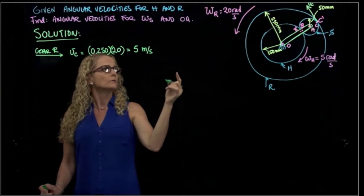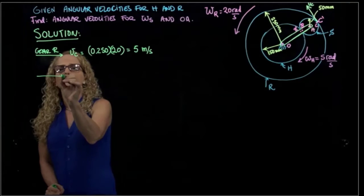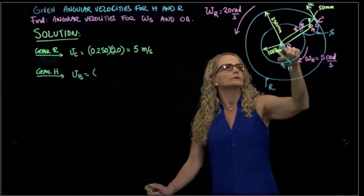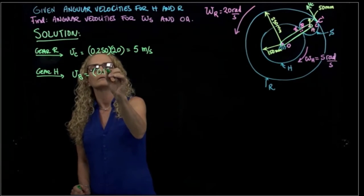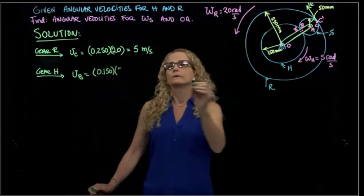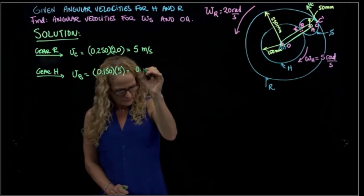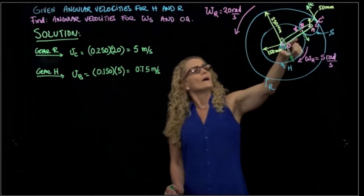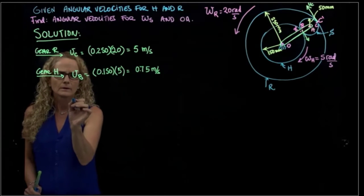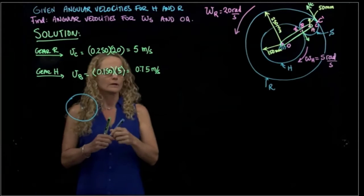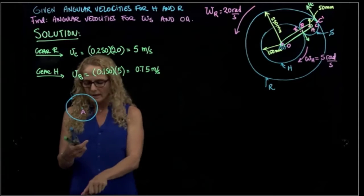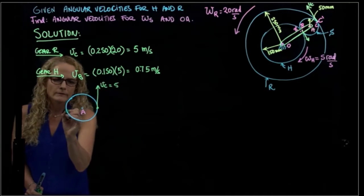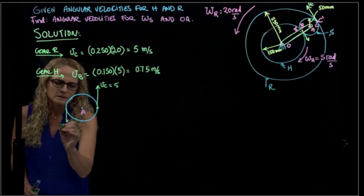Using gear H, I can calculate the velocity of B. The distance from the center of rotation is 0.150 meters, and the angular velocity is 5 radians per second, giving a velocity of B equal to 0.75 meters per second. I will now draw that small gear centered at A, with velocity of C equal to 5 m/s and velocity of B equal to 0.75 m/s.